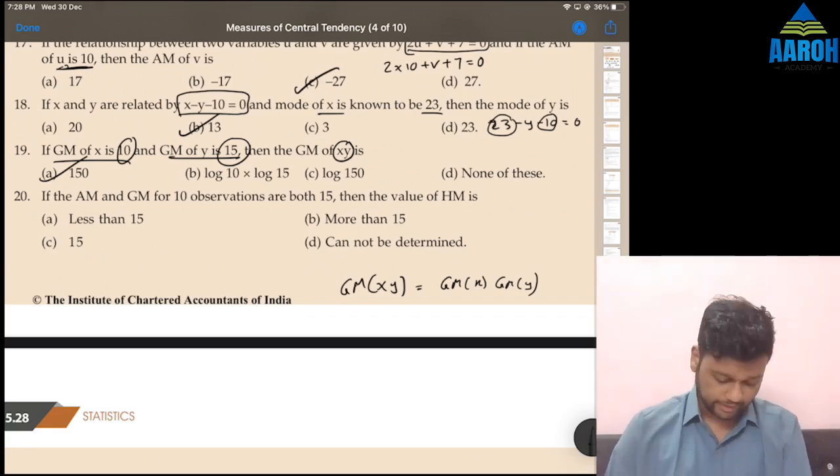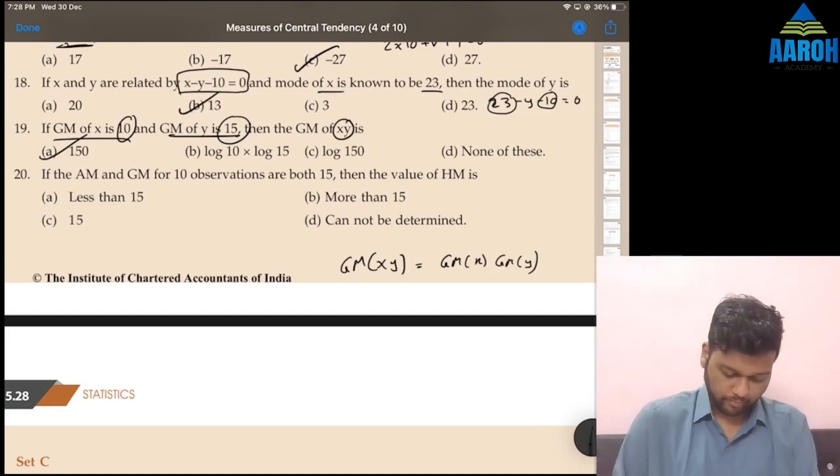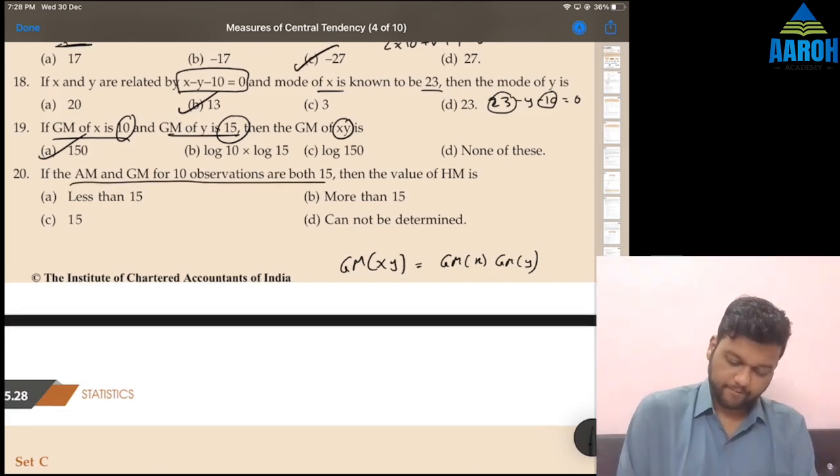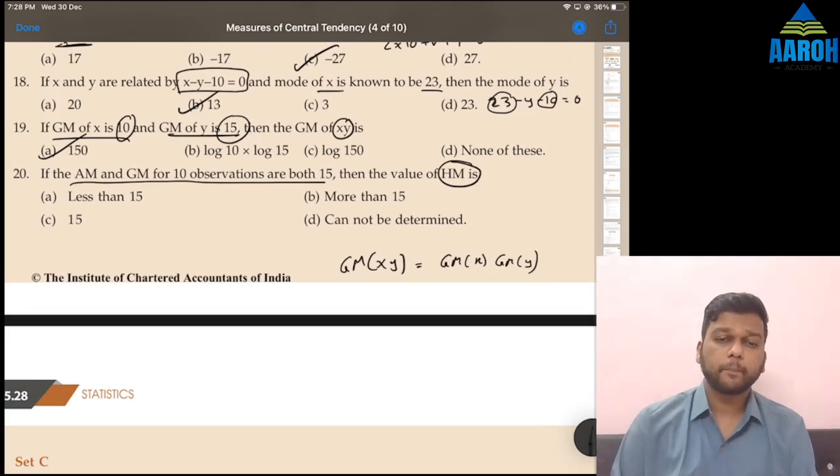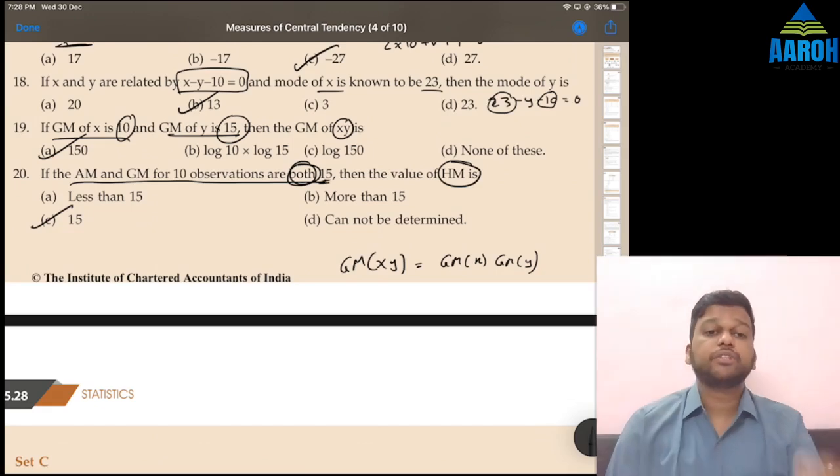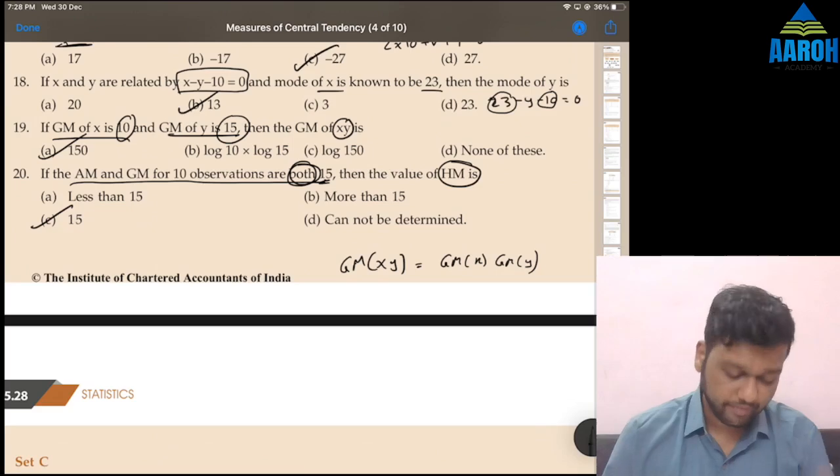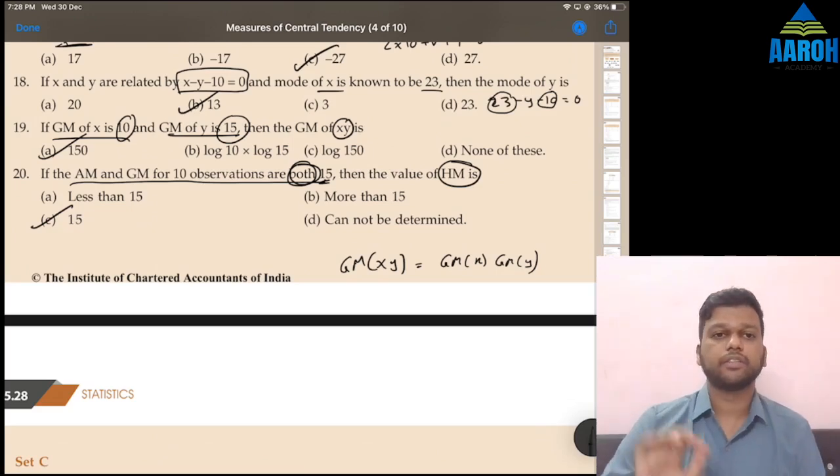Last one of this exercise. If AM and GM for 10 observations are both 15, then HM is? If both are 15, then HM also has to be 15. Because if both are 15, that means all the observations are 15 only. All 10 observations are 15, 15, 15, 15, 10 times. So AM, GM, HM all are 15. C is the correct answer.